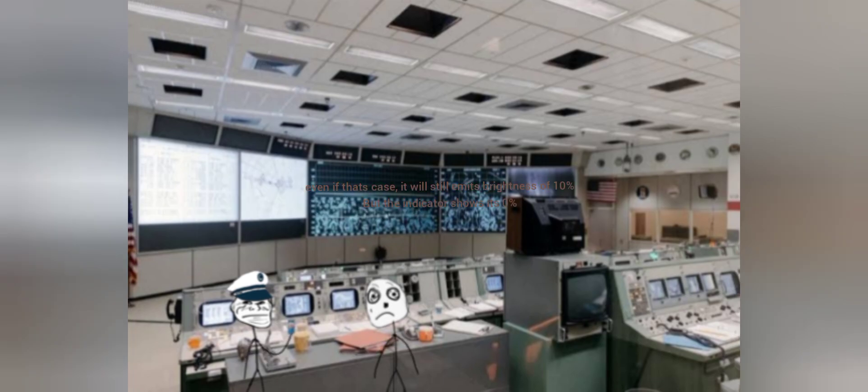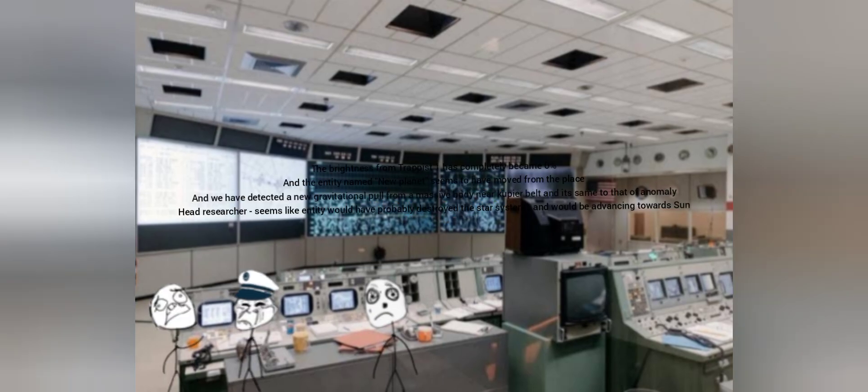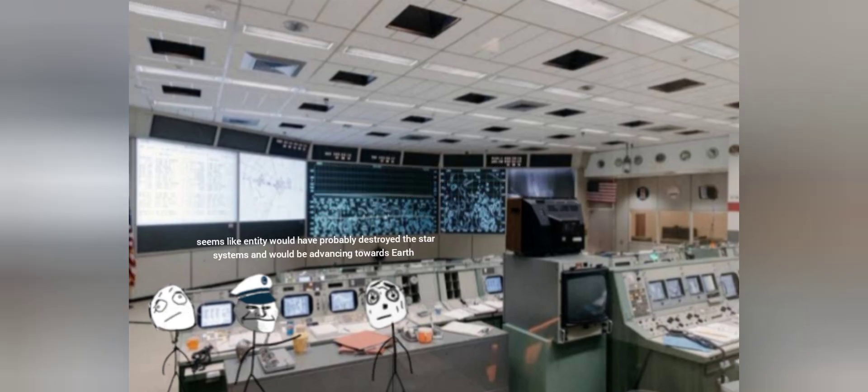Even if that's the case, it will still emit brightness of 10%, but the indicator shows it's 0%. What is it now? The brightness from Trappist 1 has completely became 0% and the entity named New Planet seems to have moved from its place. We have detected a new gravitational pull from a massive body near Kuiper belt and it's the same as that of the Anomaly. Seems like the entity would have probably destroyed the star systems and would be advancing towards Earth.